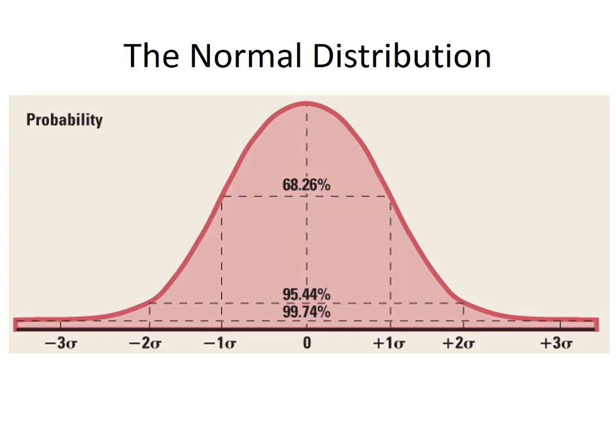Now we can say some pretty amazing things. We know that 68.26% of all observations will lie between minus 1 and plus 1 standard deviation in anything that is normally distributed. We also know that anything between minus 2 and plus 2 standard deviations will be 95.44% of all observations. And if we go out to plus or minus 3 standard deviations, now we're looking at 99.74% of all observations. So there's a 68.26% chance a data point falls between ±1 SD, 95.44% between ±2 SD, and 99.74% between ±3 SD.